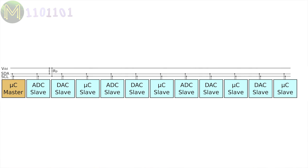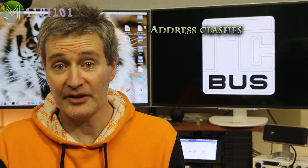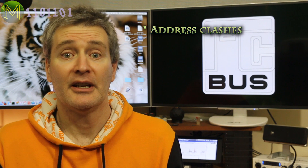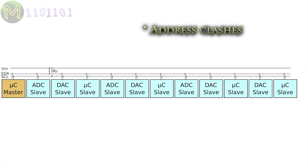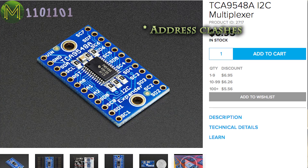Devices connected to this bus can sit anywhere on a 7- or 10-bit address space, and operate in the same manner as MAC addresses on an Ethernet network. This means you can have up to a theoretical maximum of 1,024 devices. However, in practice, you are limited by two factors: address space clashes and bus capacitance. There's no real standard for address assignment, so you often have the scenario where device addresses will clash. This can be resolved by bus multiplexers, but will add more complexity to your circuit.